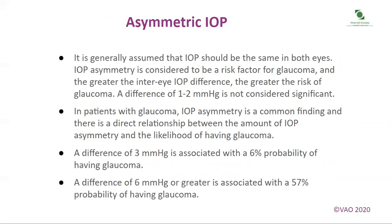Asymmetric IOP: it is generally assumed that IOP should be the same in both eyes. IOP asymmetry is considered to be a risk factor for glaucoma, and the greater the inter-eye IOP difference, the greater the risk. A difference of 1–2 mmHg is not considered significant. In patients with glaucoma, IOP asymmetry is a common finding. A difference of 3 mmHg is associated with a 6% probability of having glaucoma, while a difference of 6 mmHg or greater is associated with a 57% probability.